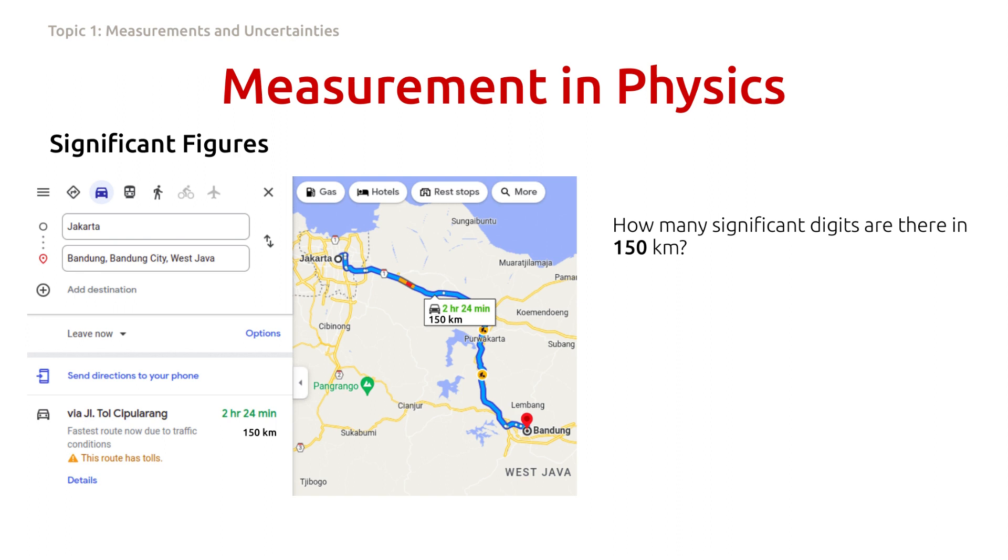This example will help us understand significant figures. The distance from Jakarta to Bandung is 150 kilometers. The question is, how many significant digits are there in 150 kilometers? The first digit here, which is 1, is the most significant figure. While the second digit, the 5, also significant, but this digit is considered as the least significant figure.